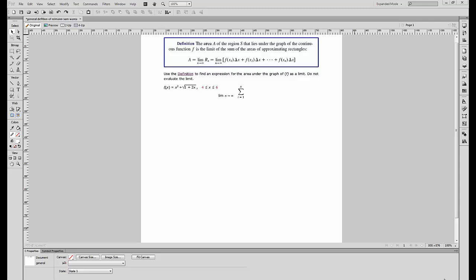All right, so basically what I'm going to do in this video is explain in four steps how we approach a problem that tells us to find the expression using the definition for the Riemann sum. We're going to use the definition for the Riemann sum to find an expression for the area under the graph, and that's of f as a limit.